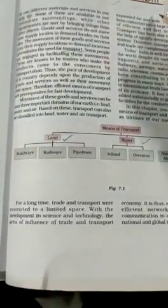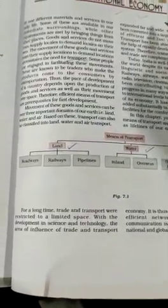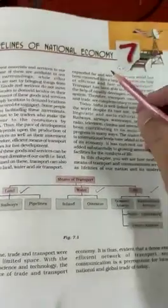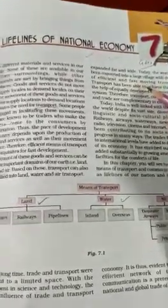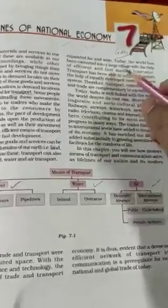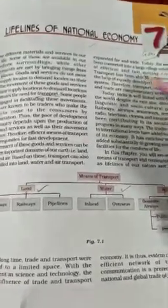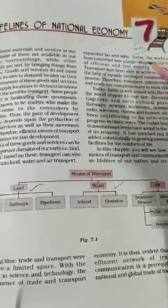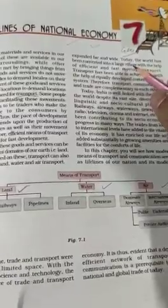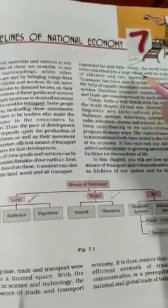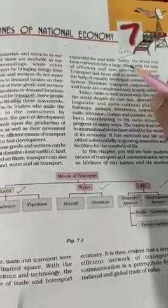For a long time, trade and transport were restricted to limited space. But with the development in science and technology, the area of influence of trade and transport expanded far and wide. When India got independence, transport was not so well developed, but now in the 21st century the transportation methods have increased a lot. On land we have trucks and movers; on water we have ships and cargo vessels; in air we have airlines, flights, and cargo planes. So it is now very easy to transport things.